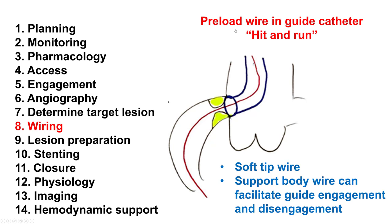In terms of wiring, one way to facilitate the procedure is to have the guide wire loaded into the guide catheter. Then the moment that the guide engages and there is pressure dampening, the wire is immediately advanced down the vessel. The wire then helps stabilize the guide, and the guide can be disengaged without losing position, allowing engagement and disengagement at will. This is sometimes called 'hit and run' — engage, get the wire down, and then get the guide back.